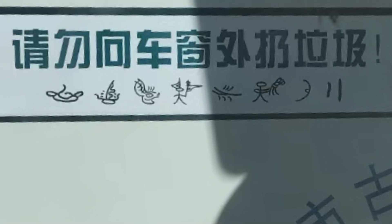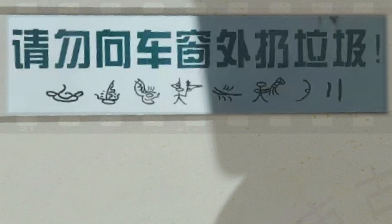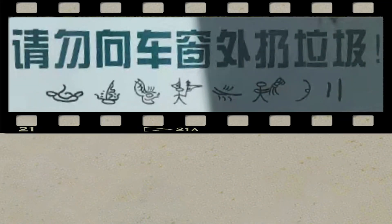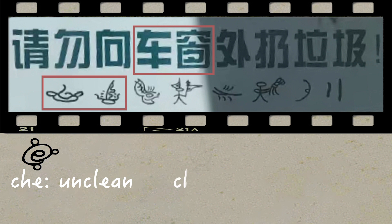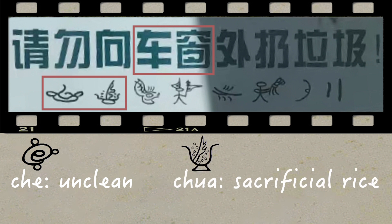Spotted on a rubbish truck in Lijiang's old town, this admonition: don't throw rubbish out of car windows. Excellent advice, given in both Chinese and Naxi. Most of the graphs here are simply phonetic borrowings, like 'car window' — chie chua — which originally meant 'unclean' and 'sacrificial rice'.